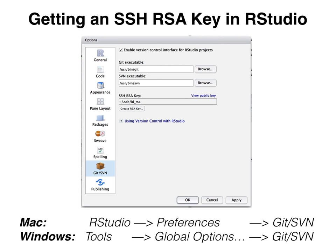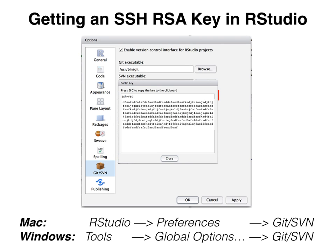You should have closed this window in RStudio and then reopened it, and you should now see a file path listed for that SSH RSA key. Now that we have our SSH RSA key connected, we're going to want to use it. Click on the View Public Key button. You should now see a box pop up saying SSH RSA and then a long string of letters and numbers. You want to copy that so you can paste it somewhere later.